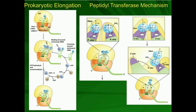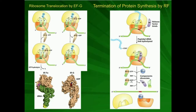Notice now the tRNA that's in the P site no longer has an amino acid — that amino acid has been moved onto the amino acid already on the tRNA in the A site. If you follow the arrows, you can see it: the amine of the amino acid in the A site attacks the carbonyl of the formyl-methionine ester bond of the tRNA in the P site, the tetrahedral intermediate collapses, and formyl-methionine moves onto amino acid 2. So now you have an empty tRNA in the P site and a tRNA in the A site with the growing peptide chain. We're going to have to get rid of that empty tRNA and move the tRNA with the amino acids over one — that's done through ribosome translocation, which in prokaryotes is carried out by a protein called EFG.